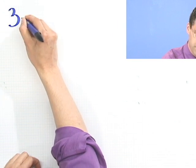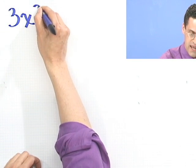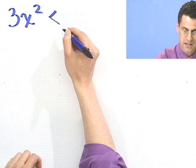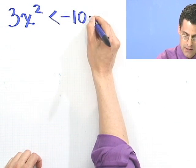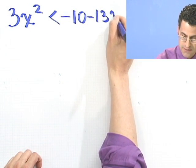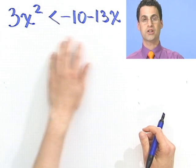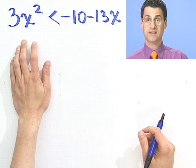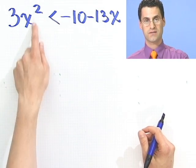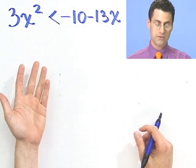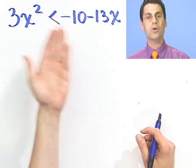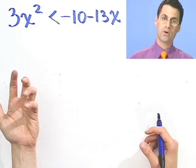Suppose we wanted to find all the values for x for which 3x² is always going to be less than -10 - 13x. OK, so there's a sort of a complicated-looking inequality. And notice that the scary part is that I have an x² in there. So this is not looking good. But what I'm going to do is treat this as though it were almost an equality.